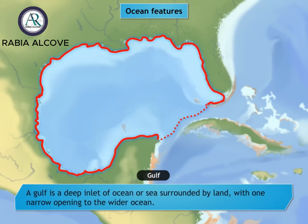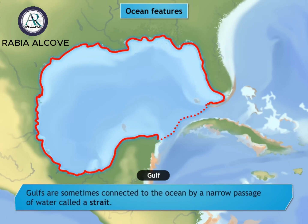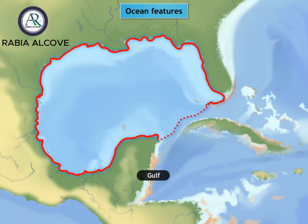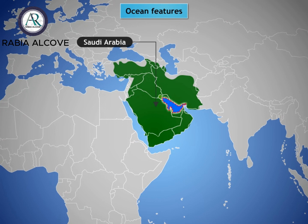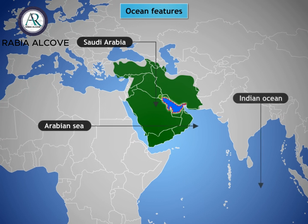A gulf is a deep inlet of ocean or sea surrounded by land with one narrow opening to the wider ocean. Gulfs vary in size, shape, and depth, and are sometimes connected to the ocean by a narrow passage of water called a strait. Gulfs are believed to have been formed by movement of the Earth's tectonic plates. The Persian Gulf is an almost enclosed sea, which is part of the Indian Ocean.